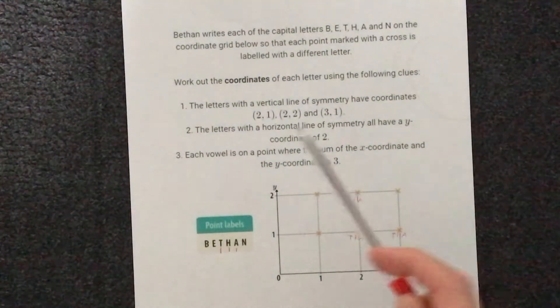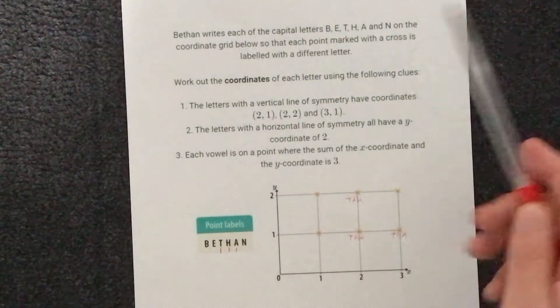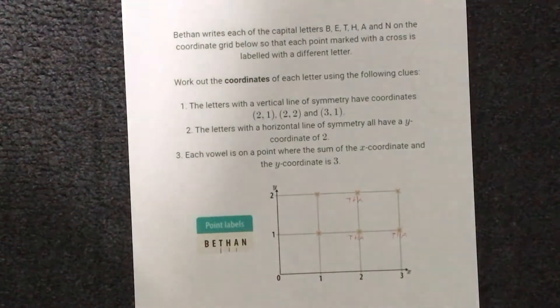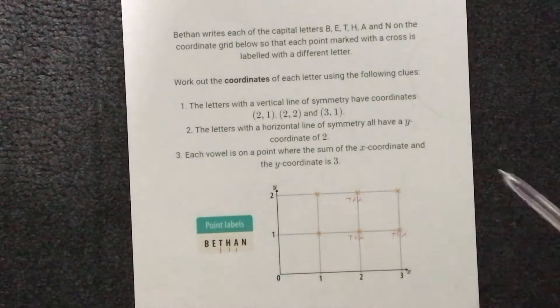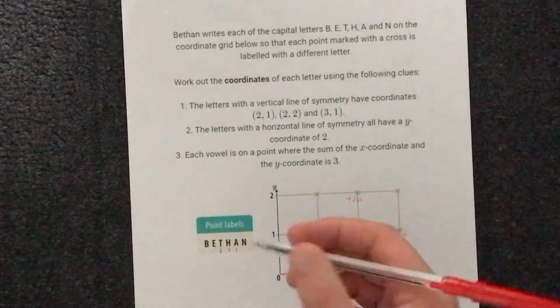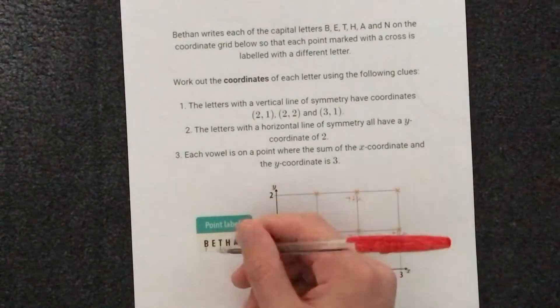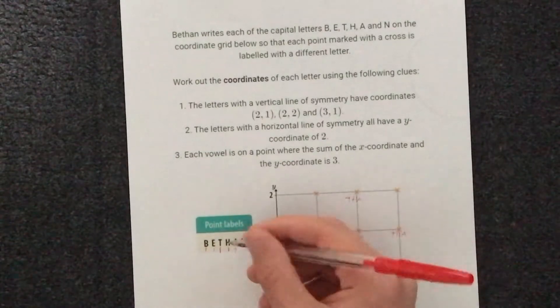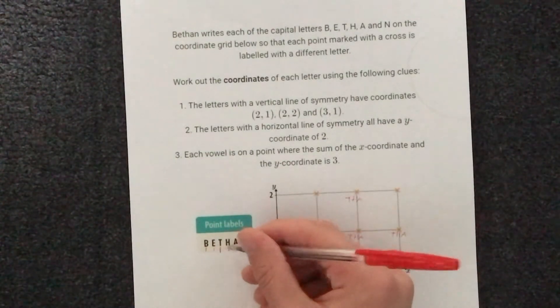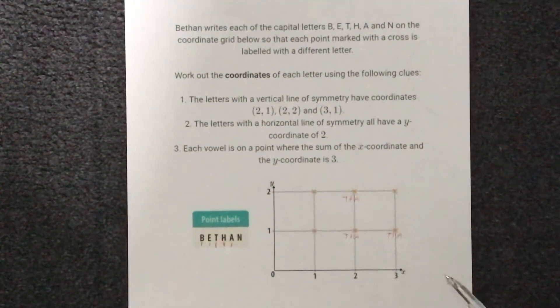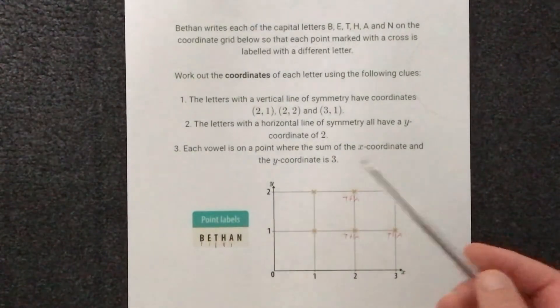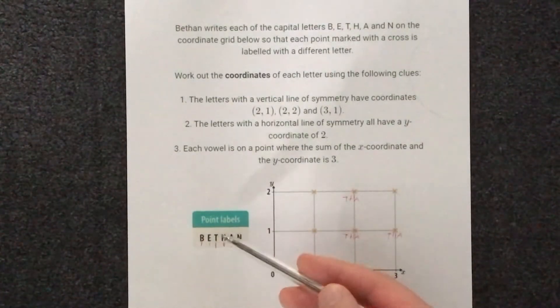Now our second clue: the letters with a horizontal line of symmetry all have a y-coordinate of 2. Well which letters have a horizontal line of symmetry? That's going to be B, E and H. And they all have a y-coordinate of 2, so B, E and H.